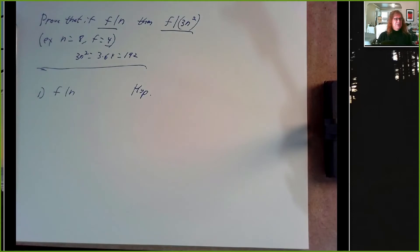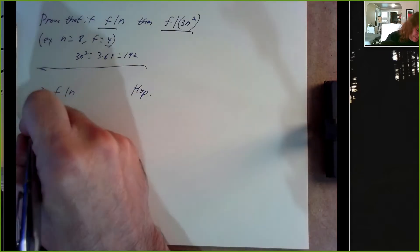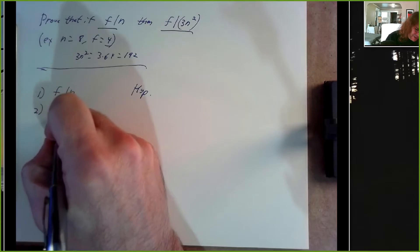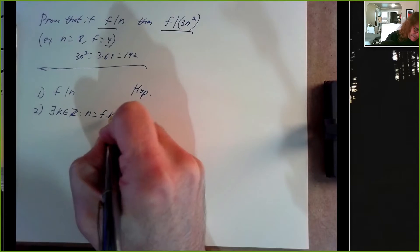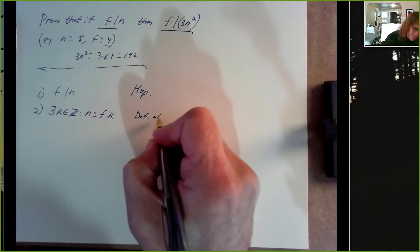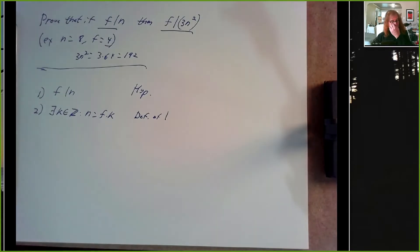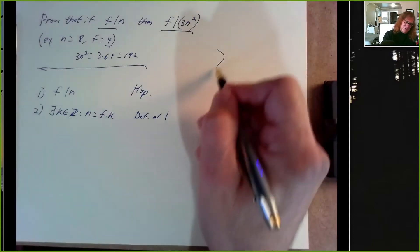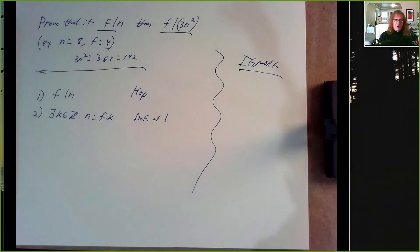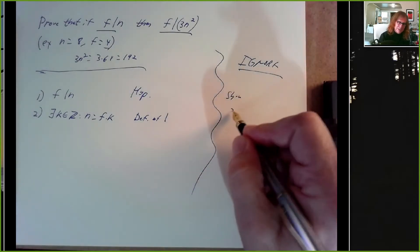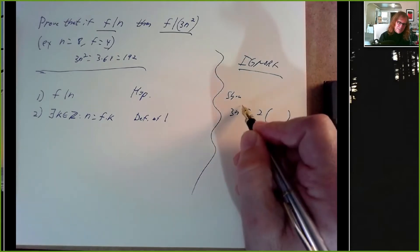Let's change this into something that uses the definition of divisibility. There exists some integer k such that n equals f times k. That's the definition of that vertical pipe divisibility. Over here I'm going to make my little section for scratch work, and what I want to show is that 3n² equals f times some integer.